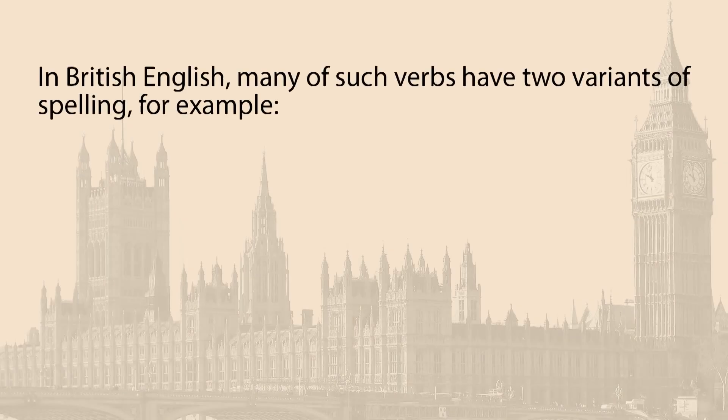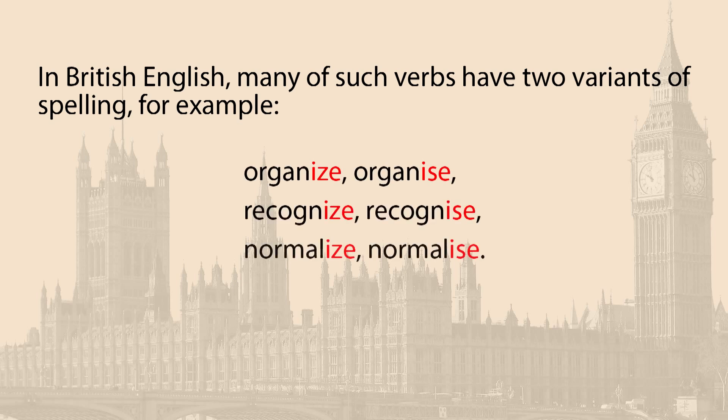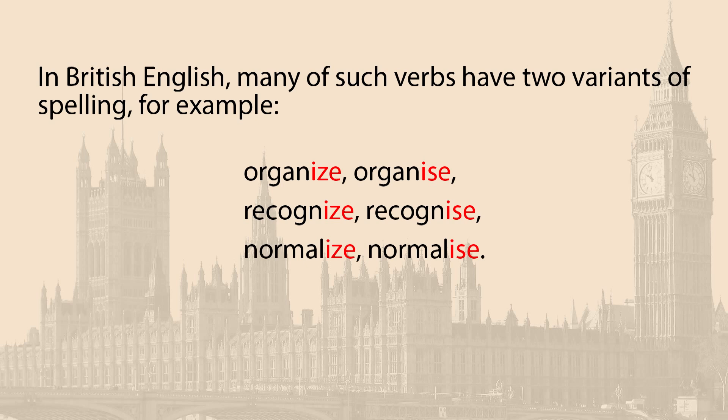Let me explain some difficult suffixes of verbs. The suffixes -ize and -ise have the same pronunciation but are spelled differently, and they present the most difficulty for English language learners. In British English, many such verbs have two variants of spelling — for example: organize, recognize, normalize. In American English, such verbs are usually spelled with the suffix -ize.